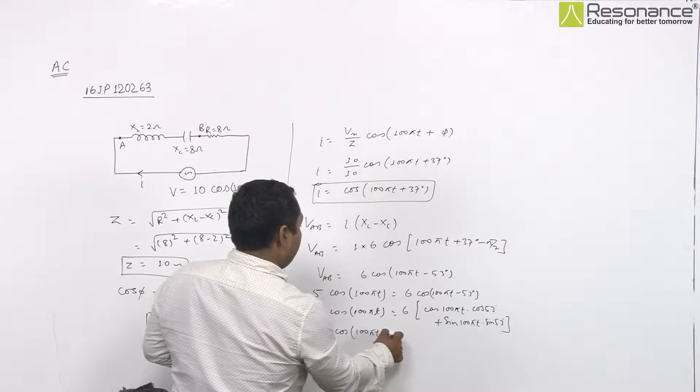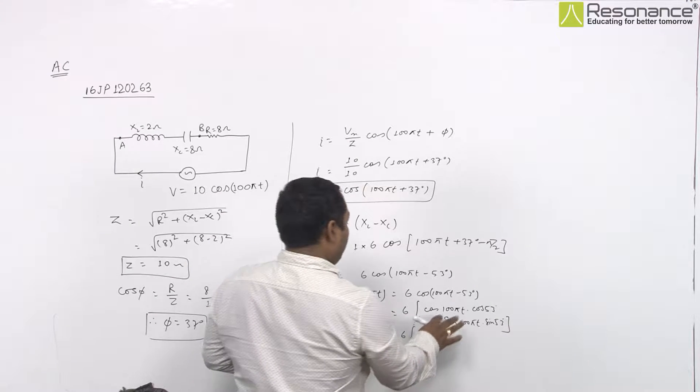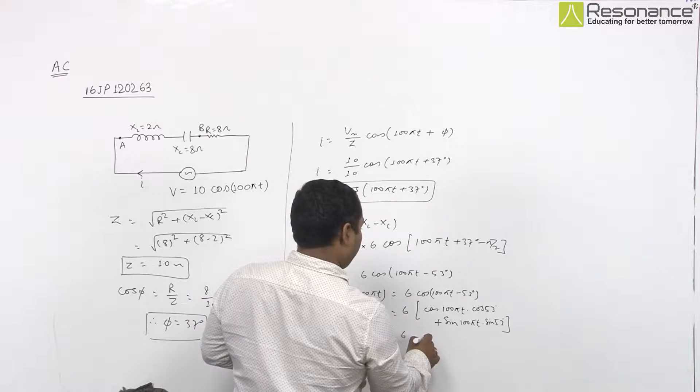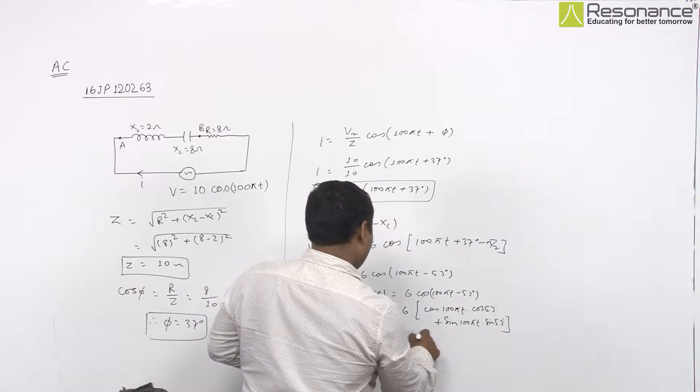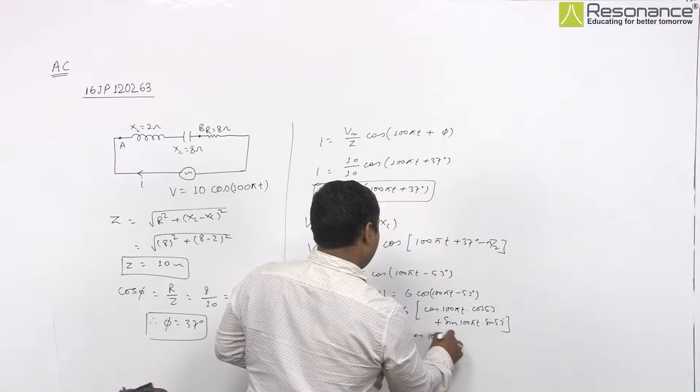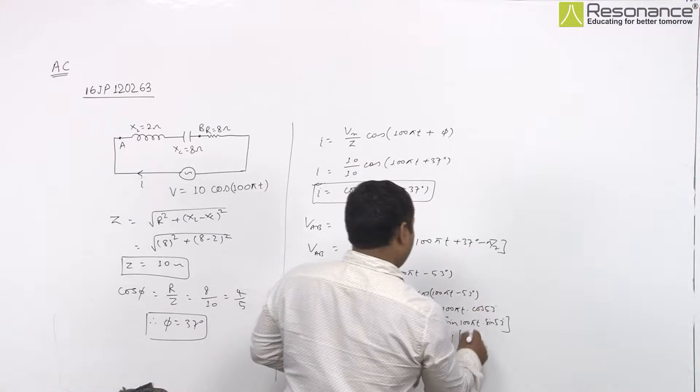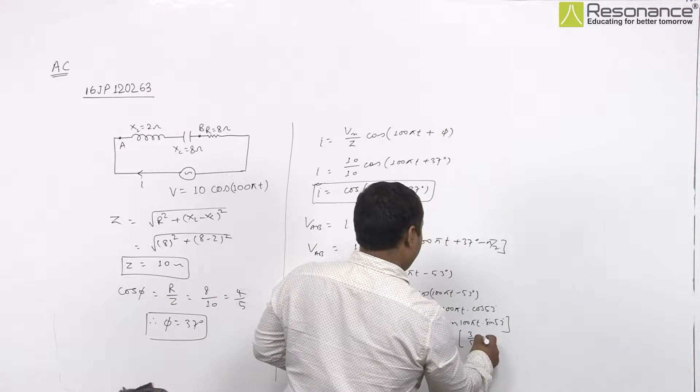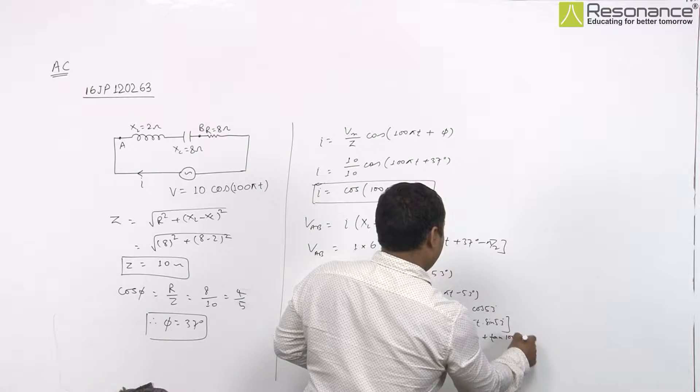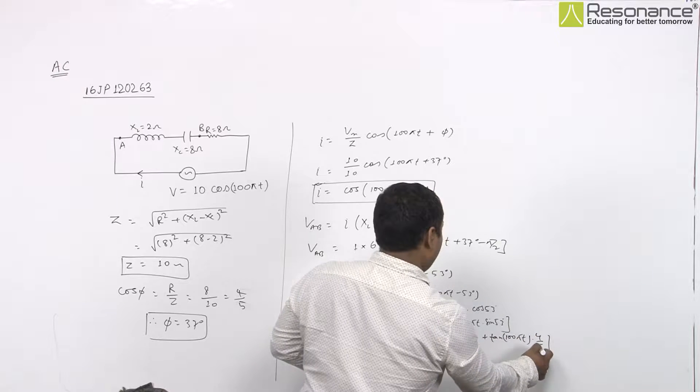So cos of 100 pi T equals 6, you can take cos of 100 pi T common. So it will be cos of 53 degree, that is 3 by 5 plus sin of 100 pi T multiplied with 4 upon 5.